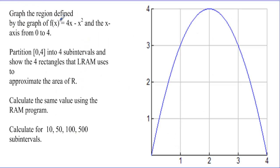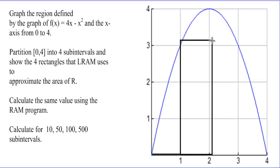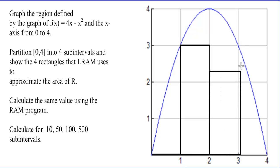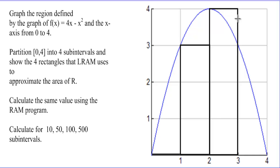Example 2: Graph the region defined by f(x) = 4x − x² and the x-axis from zero to four. Partition zero to four into four subintervals and show the four rectangles that LRAM uses to approximate the area. Here's the graph of that upside-down parabola. Using LRAM, the first rectangle has an area of zero. The subsequent rectangles each have a base of one, raised until the left side hits the curve. That gives us four rectangles total.